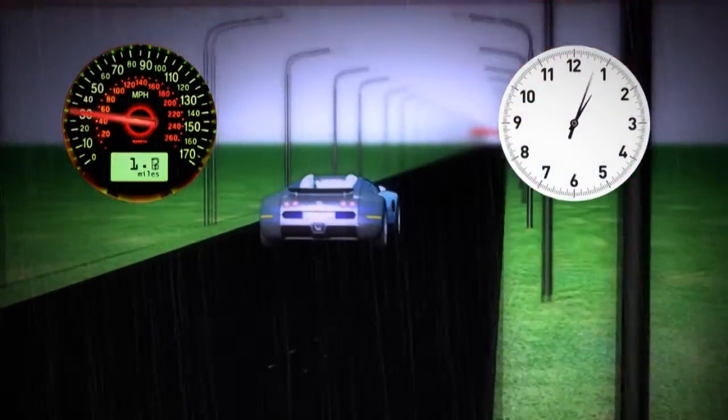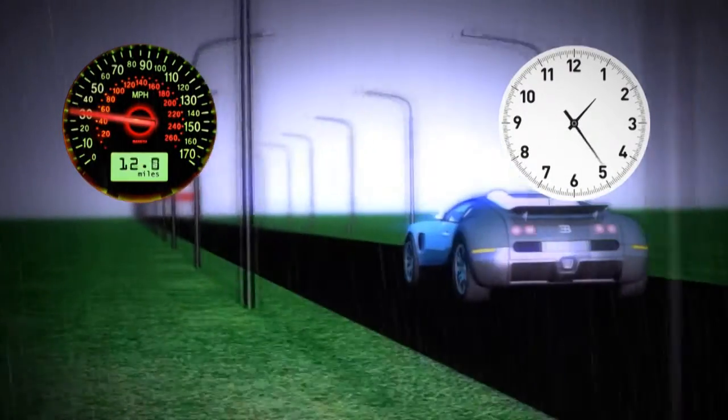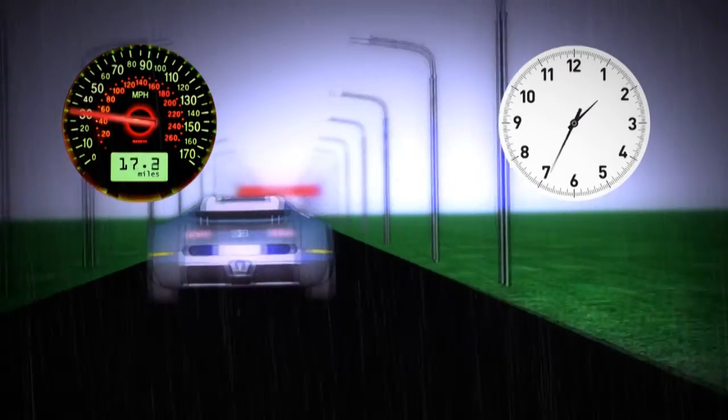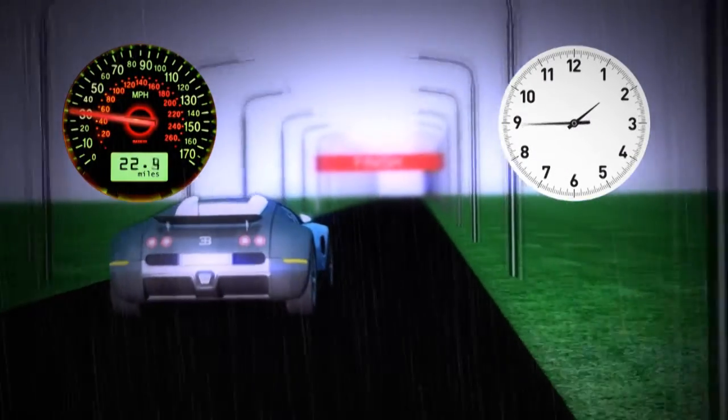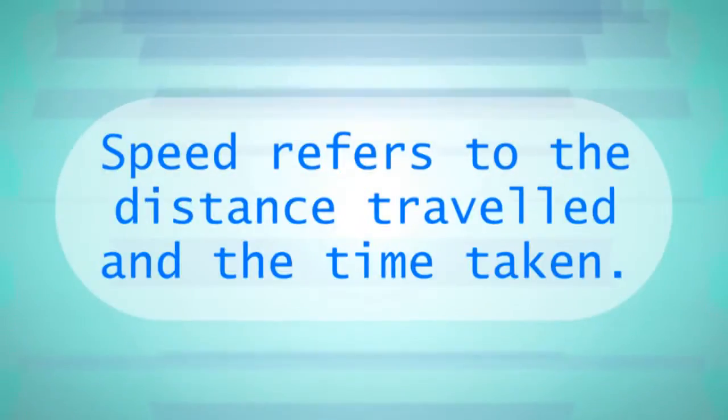Speed is very easy to understand, especially if you've been in a car. For example, if you can drive at a constant speed of 30 miles per hour, you will, in one hour of time, travel a distance of 30 miles. So speed refers to the distance travelled and the time taken.